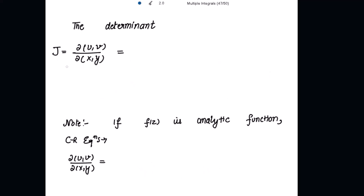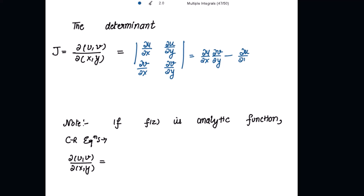The determinant J = ∂(u,v)/∂(x,y) is the Jacobian of the transformation. This 2×2 determinant has entries: ∂u/∂x, ∂u/∂y in the first row, and ∂v/∂x, ∂v/∂y in the second row. Solving the determinant gives J = (∂u/∂x)(∂v/∂y) − (∂u/∂y)(∂v/∂x). This is called the Jacobian of transformation.